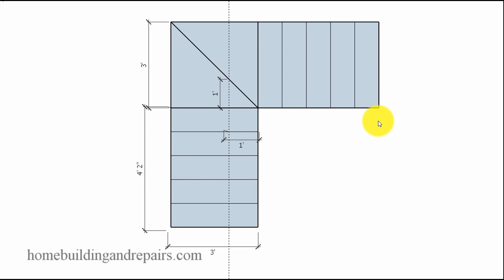The building codes require a six inch minimum for winder stairways. That would be the minimum distance here. And I drew the walk line, which is going to be one foot from the inside of the stairway.